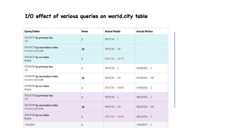A key takeaway from this table is that update and delete statements are also reads, even though they are write statements — the reason is that the rows must be located before they can be changed. When using a secondary index or no index for updating or deleting rows, many more records are read than updated. In our example, there were 4000 rows fetched because the table was relatively small, but on larger tables, this issue can be more evident.